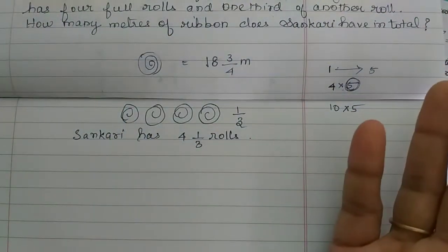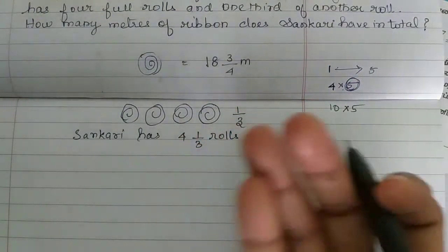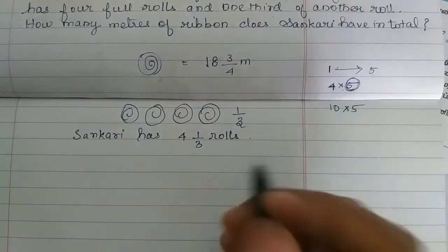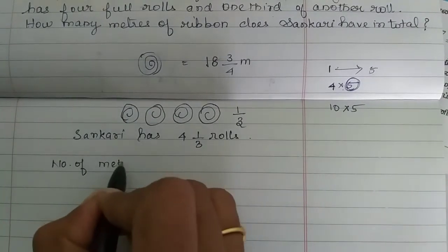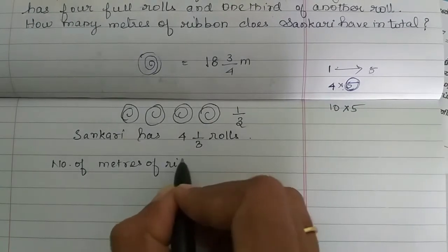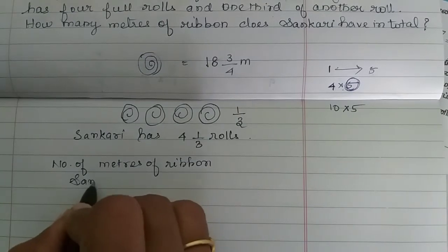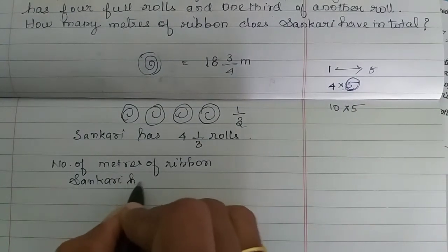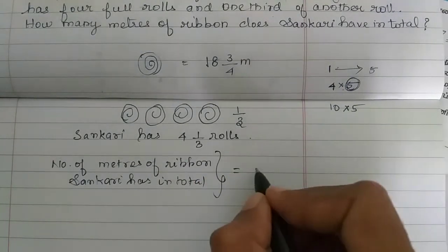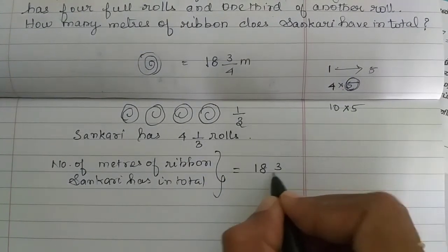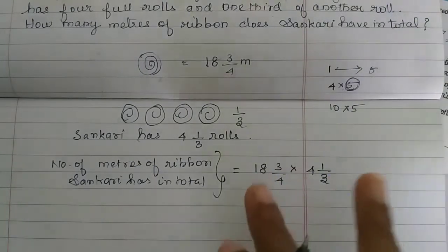How many meters of ribbon? What do you do with this fraction? This fraction is multiplied by the total meters of ribbon. So, number of meters of ribbon Sankari has in total is equal to, 1 roll is 18 3 by 4. Now, 4 rolls is equal to. That is, 4 1 by 3 rolls is equal to. So, we have to multiply.